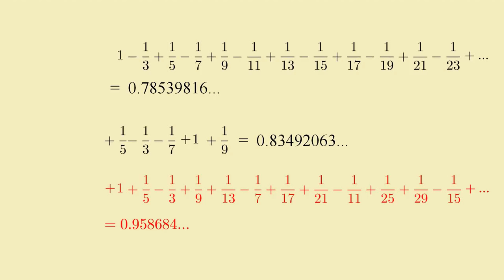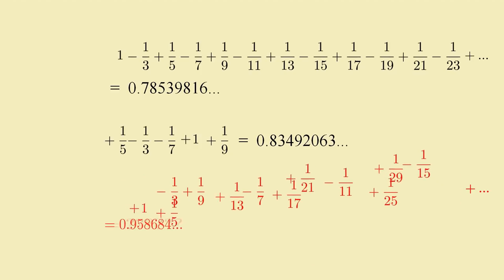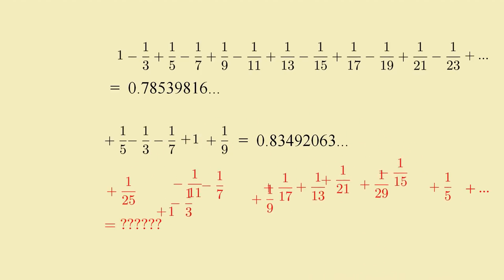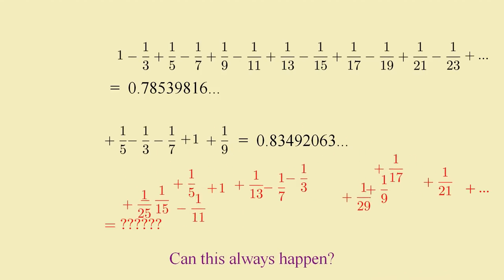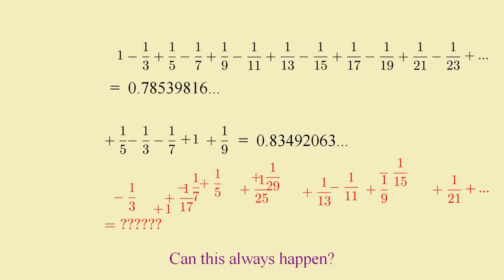But even so, why does this happen? Even with an infinite number of terms, how can you change the sum if you only rearrange the terms? We'll get into how this can happen shortly, but actually you should know that we've understated the weirdness here so far. After seeing that we could change the sum of this one series just by rearranging the terms, you might ask what other alternative sums there could be. And can this happen with all infinite series, or just some of them? If only some, which ones?